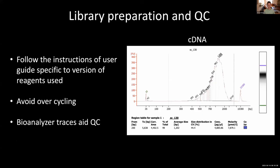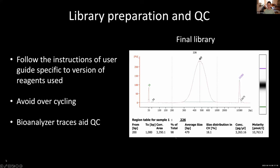After you've run the Chromium and have cDNA, here are a few pointers for preparing the library and doing quality control. It's important to follow the instructions of the given user guide specific to the version of reagents you're using — for example, with 10x we might have version 3 versus 3.1 versus high throughput. We've also found that it really helps to avoid over-cycling or over-amplifying your library. You can use bioanalyzer traces to aid in quality control before sequencing — for example, looking at cDNA distribution, average fragment size, and concentration, which we also note in our metadata for the final library.